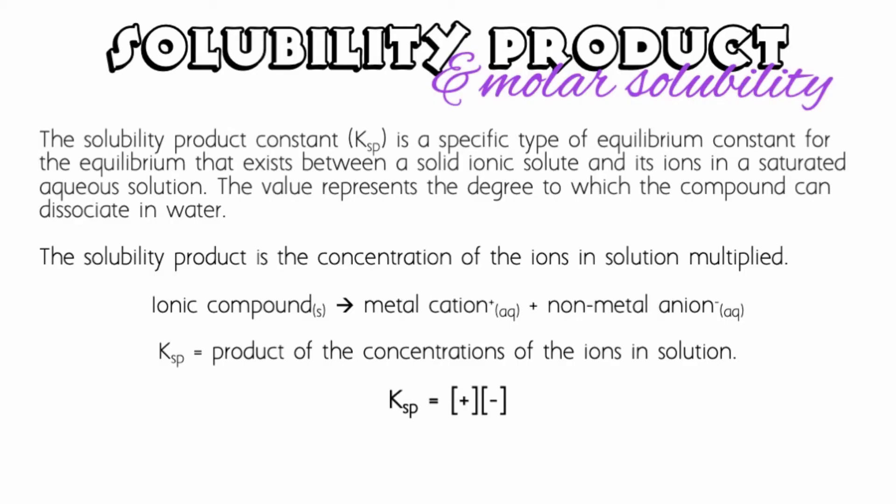The solubility product constant (Ksp) is a specific type of equilibrium constant for the equilibrium that exists between a solid ionic solute and its ions in a saturated aqueous solution. This value represents the degree to which an ionic compound can dissociate in water.